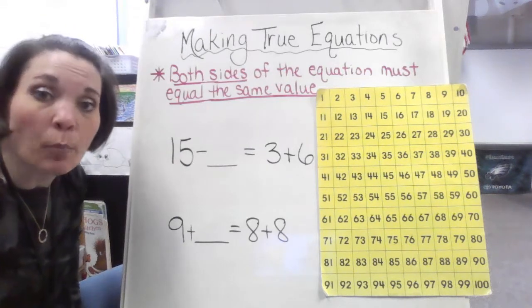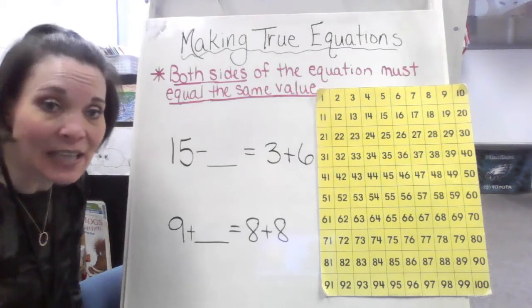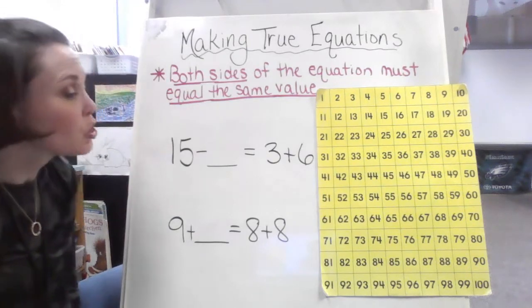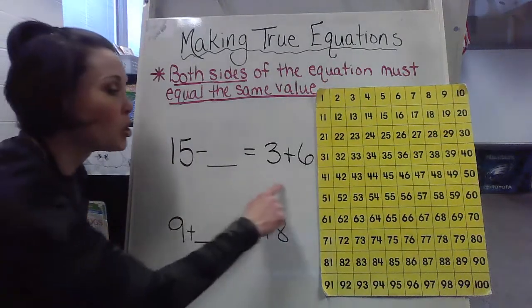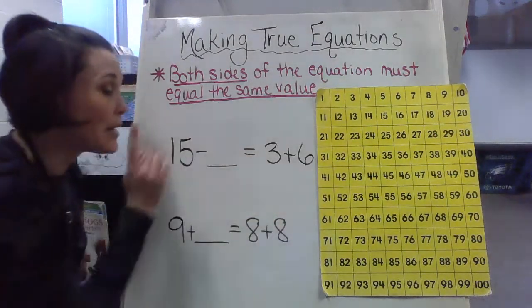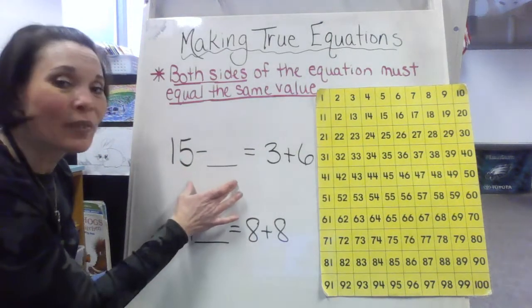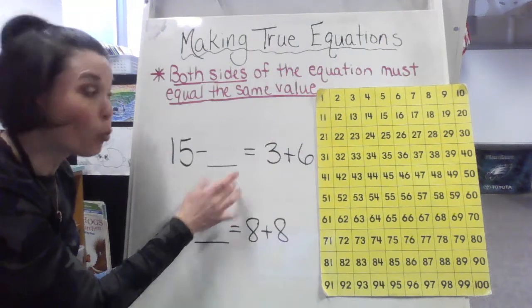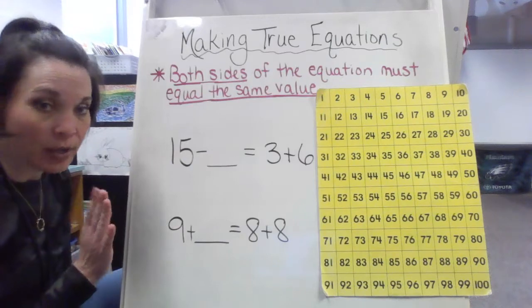So basically what that means is both sides of the equation must have the same exact value. So whatever we get as an answer here should be exactly the same answer here. Not necessarily what is missing but what the answer you get once we figure out what is missing. So let's go ahead and get started.